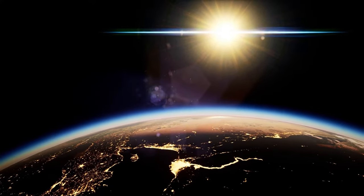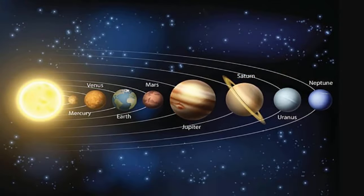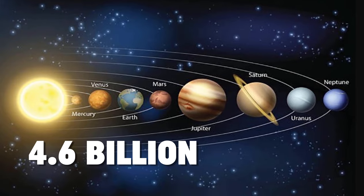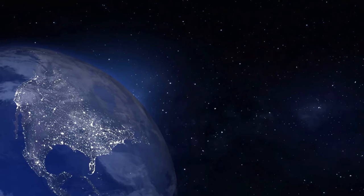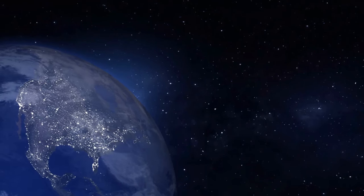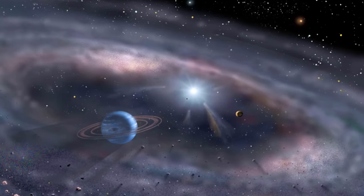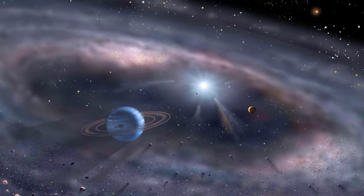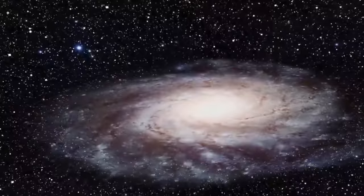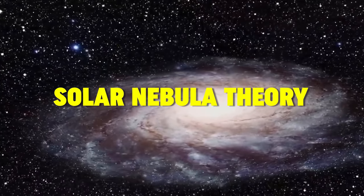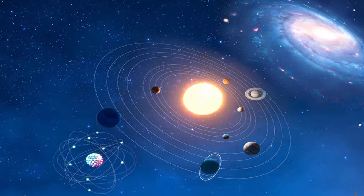The narrative of our solar system's birth begins approximately 4.6 billion years ago, a chapter written in the cosmic dust and gas of the universe. This monumental event, the formation of the solar system, is best understood through the lens of the solar nebula theory, a cornerstone of modern astrophysics.